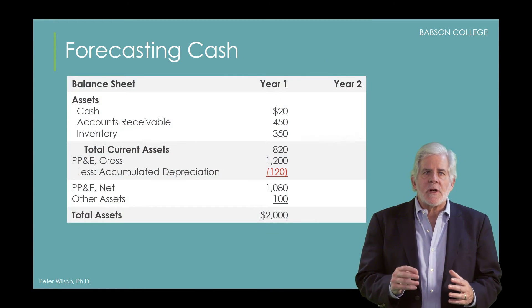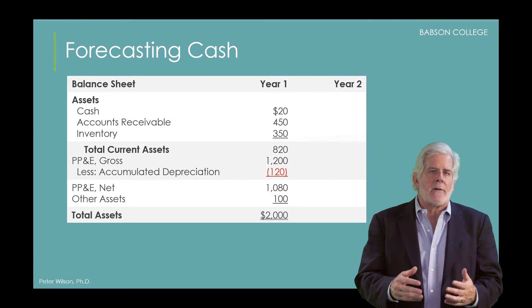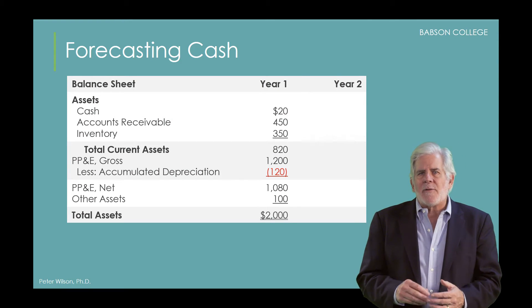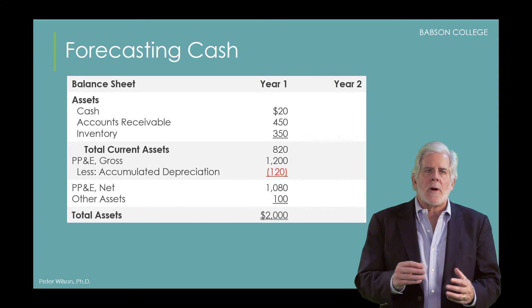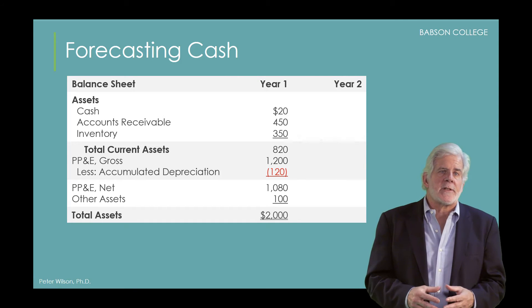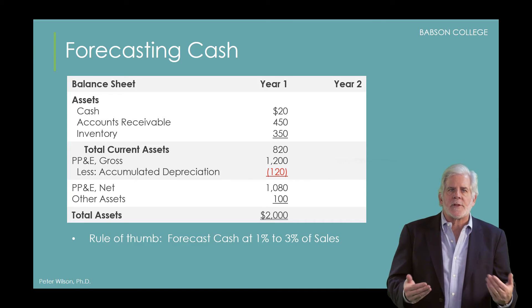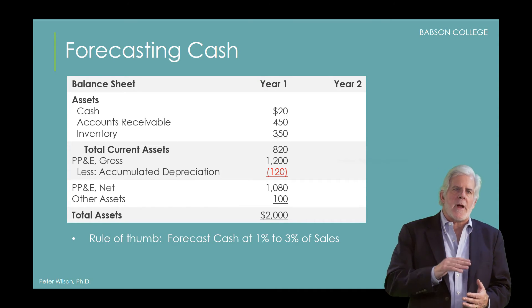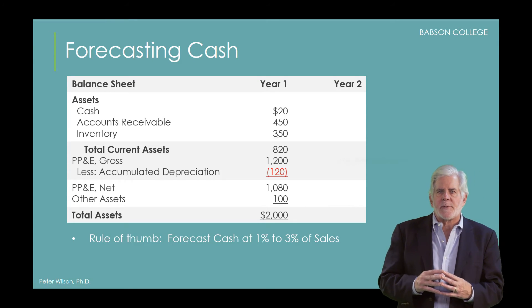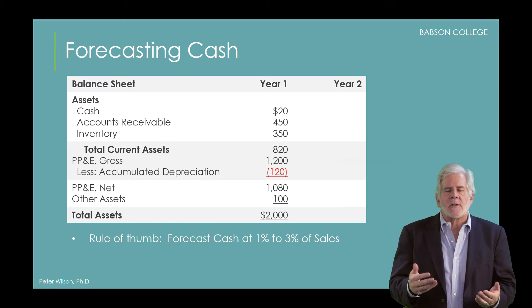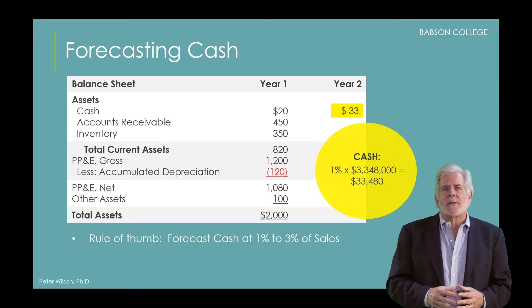Let's talk about cash. Cash could be the balancing account in our forecast, setting it equal to whatever is needed to balance out the balance sheet. However, doing this could lead to a negative cash amount. So I prefer to forecast cash directly as a percent of sales. A good rule of thumb is to forecast cash between 1% and 3% of sales, since firms try to keep their cash balances as low as possible but still have enough on hand to pay for day-to-day operating expenses. Anything more than that is usually invested to earn a return. For Nebco, we'll forecast cash at 1% of forecasted sales.